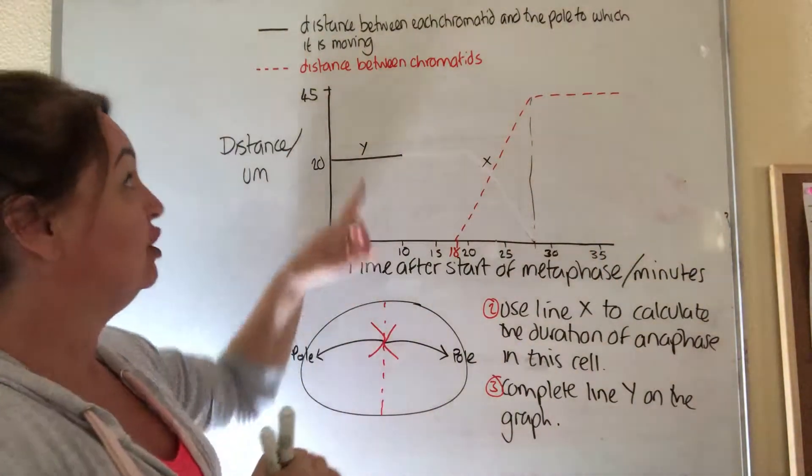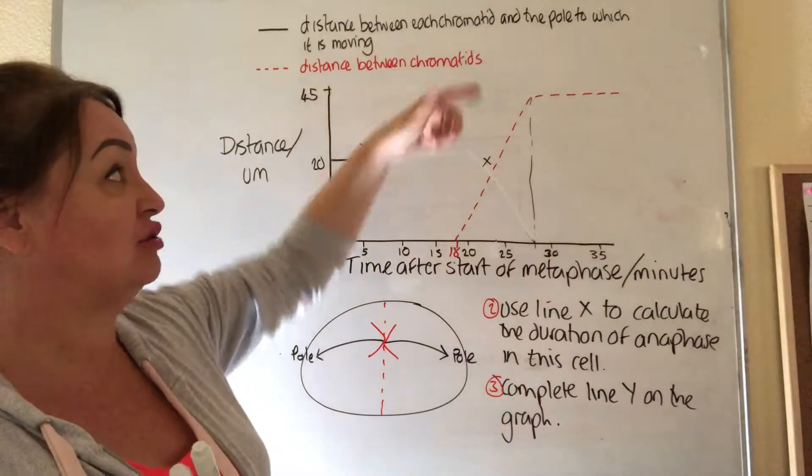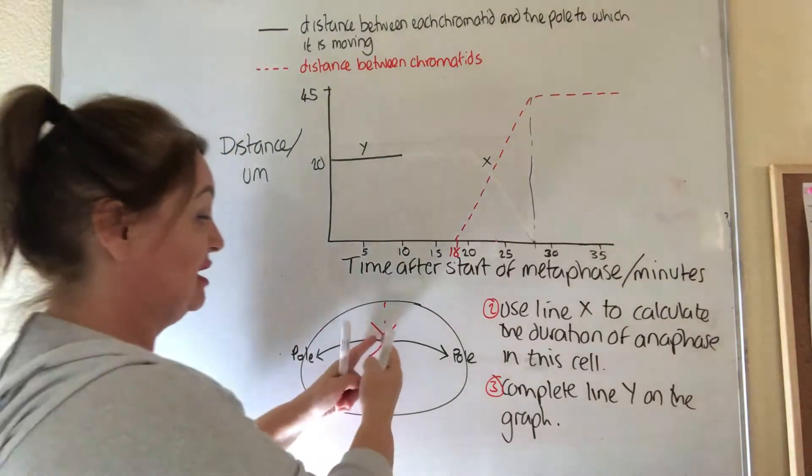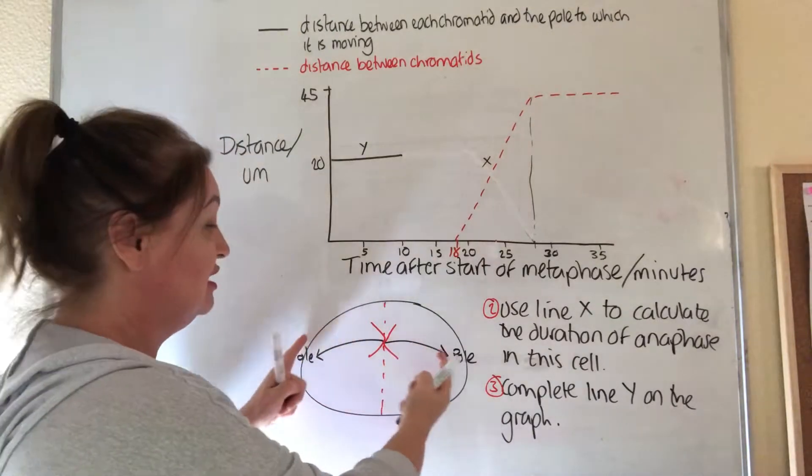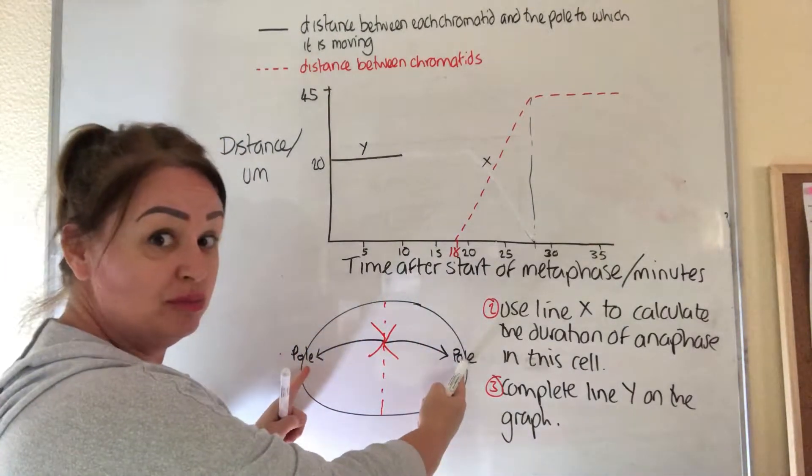So basically, if we look at the distance between chromatids, that means from the beginning when they start to be pulled apart to the end when they stop moving apart.